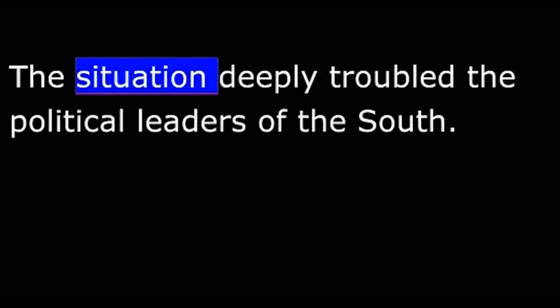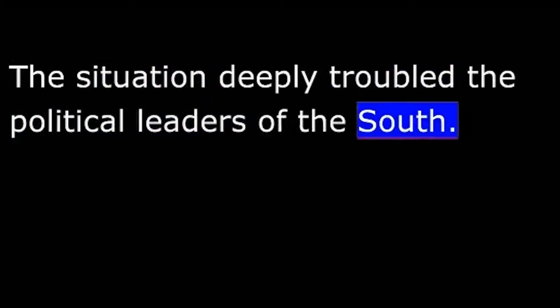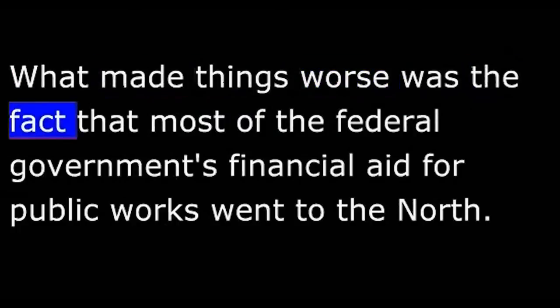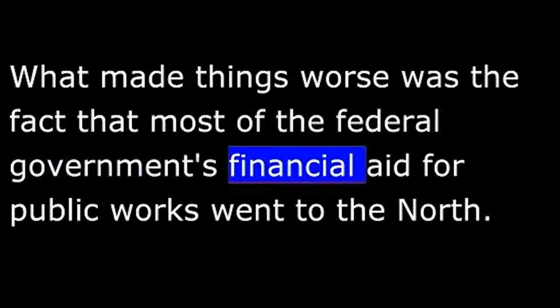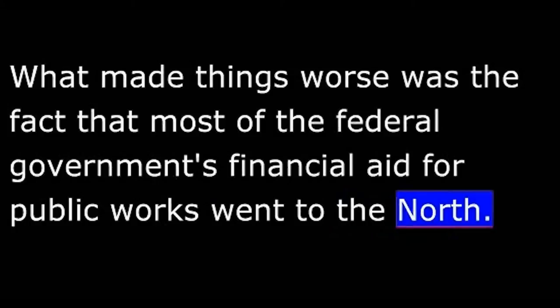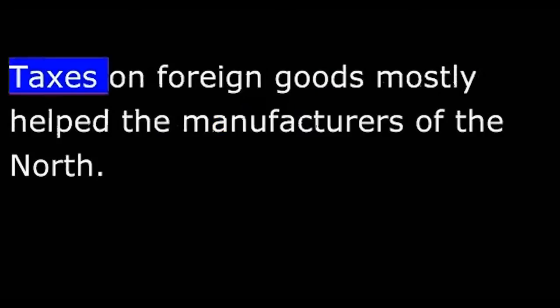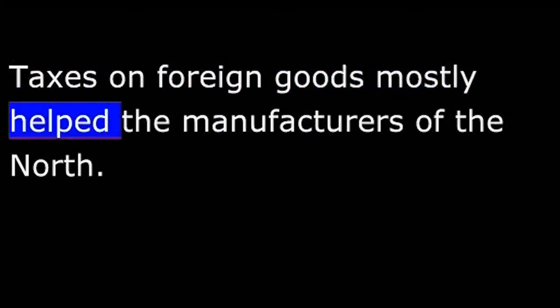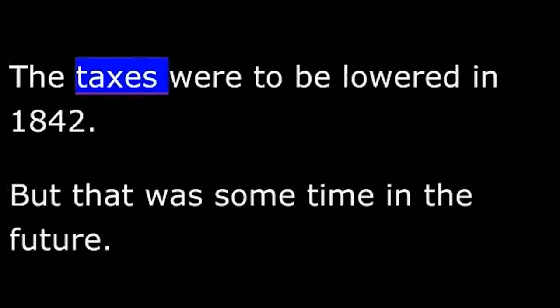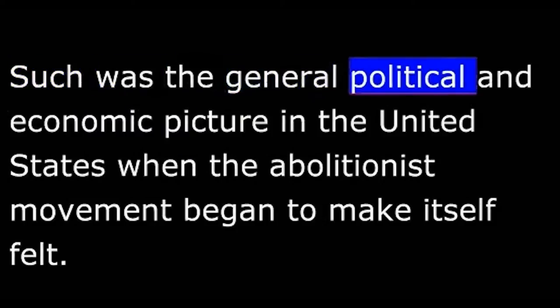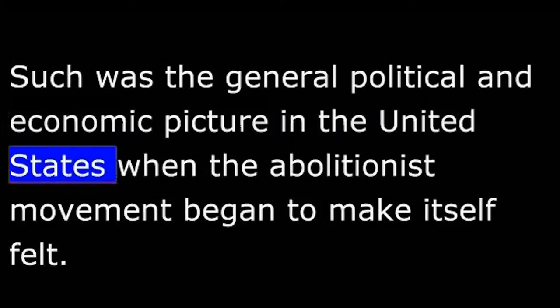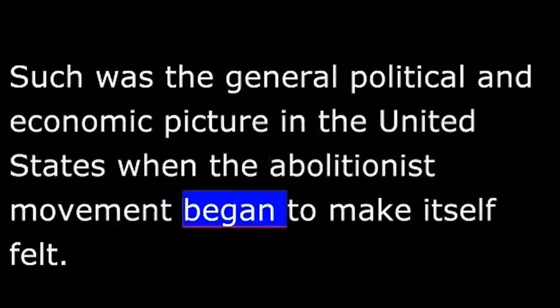The situation deeply troubled the political leaders of the South. What made things worse was the fact that most of the federal government's financial aid for public works went to the North. Taxes on foreign goods mostly helped the manufacturers of the North. The taxes were to be lowered in 1842, but that was some time in the future. No one could be sure what would happen then. Such was the general political and economic picture in the United States when the abolitionist movement began to make itself felt.